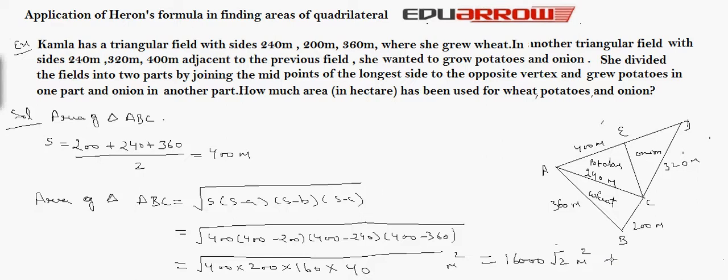That is equal to 16,000 root 2 meter square. Or we can write it 1.6 into root 2 hectare. So the area of triangle ABC is equal to 1.6 into root 2 hectare. That is equal to 2.26 hectare nearly.